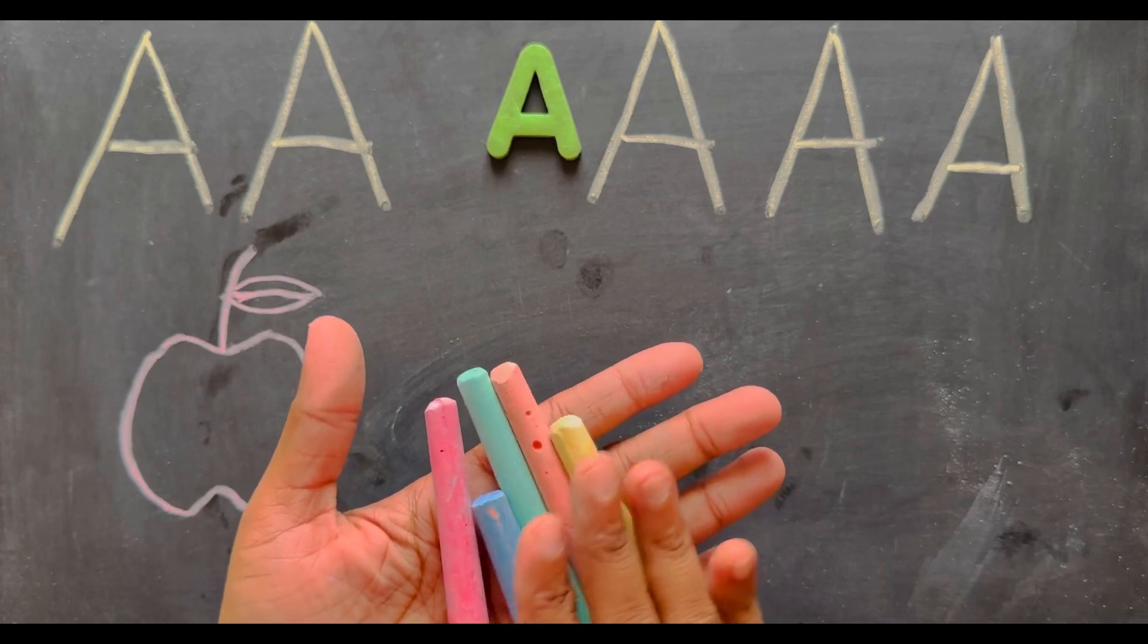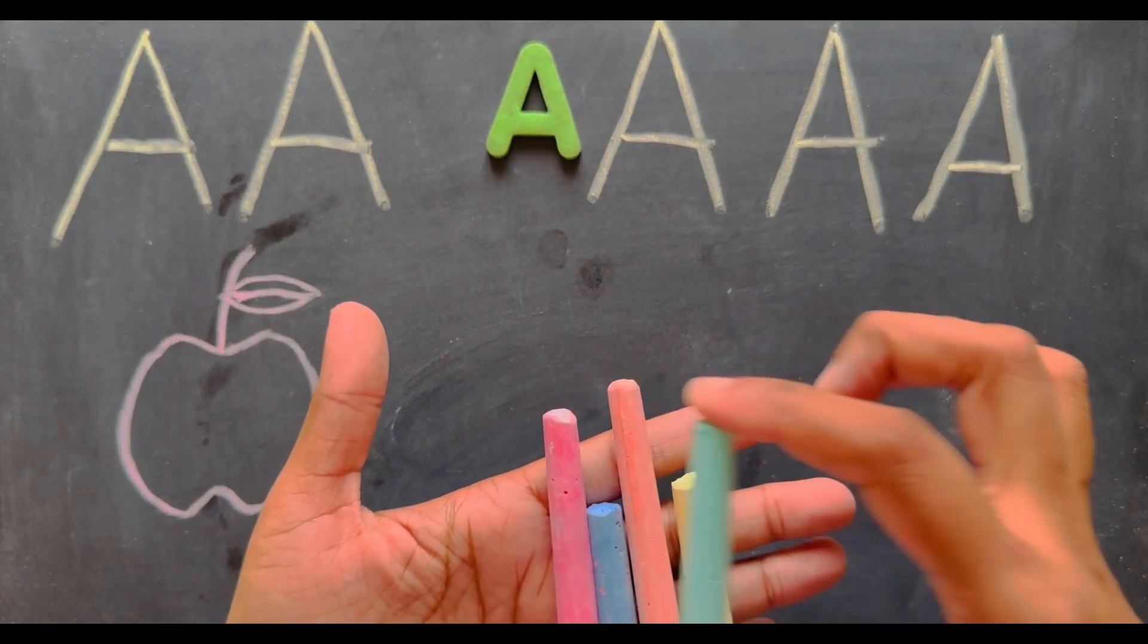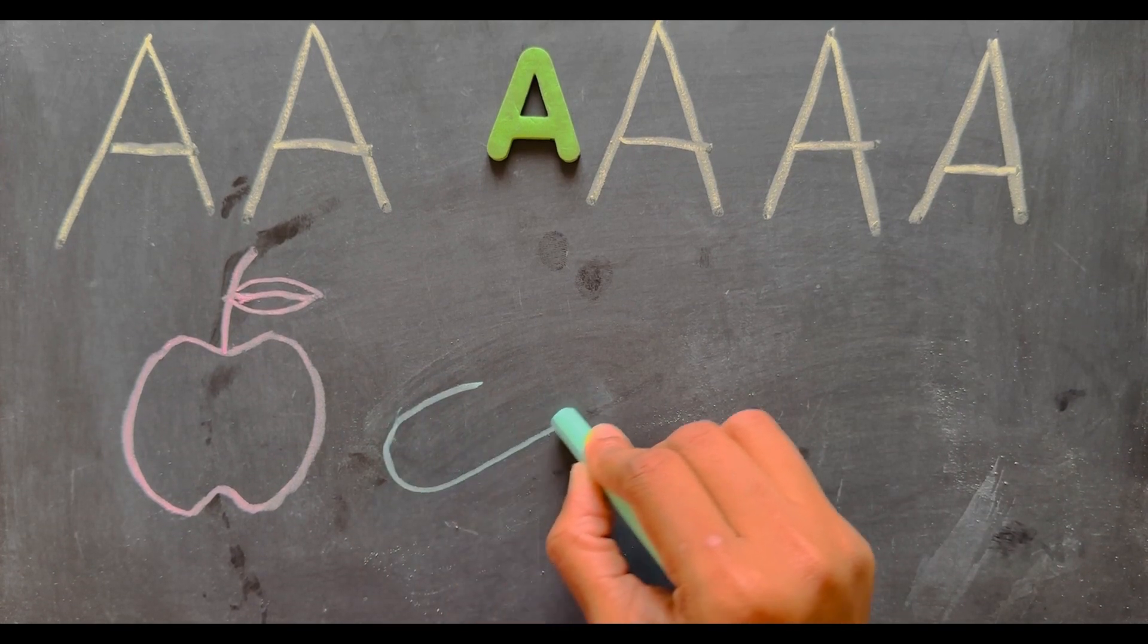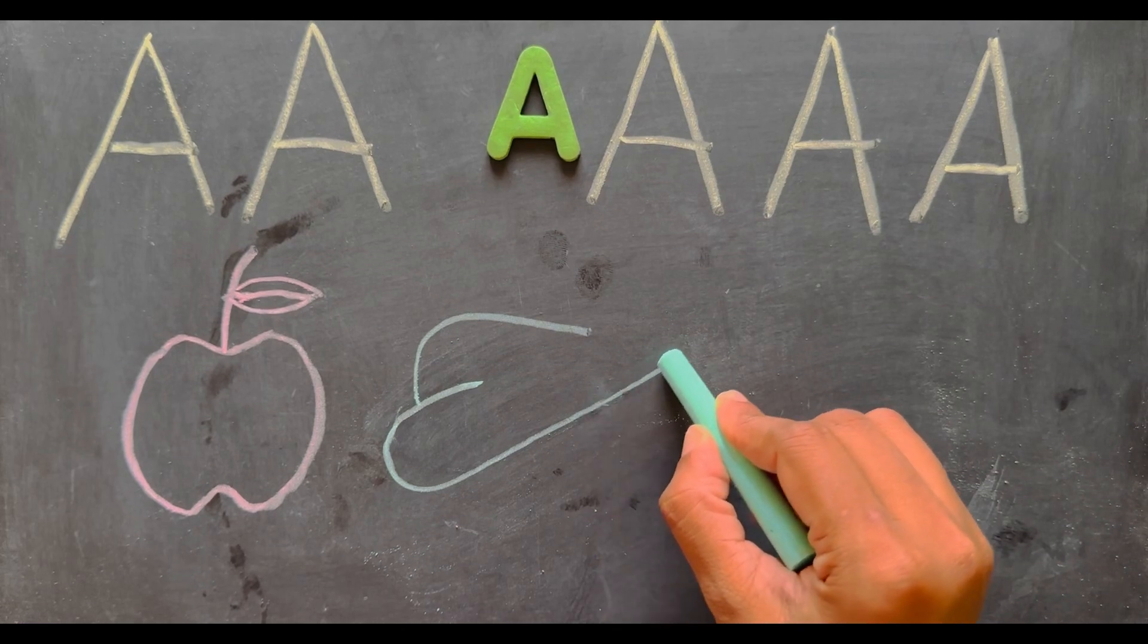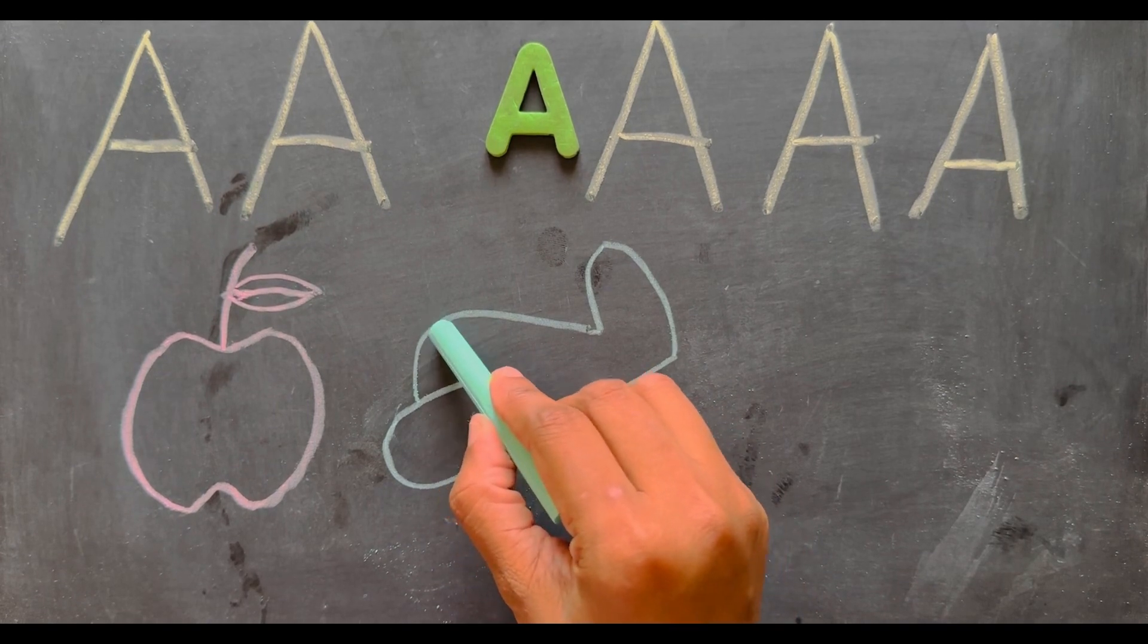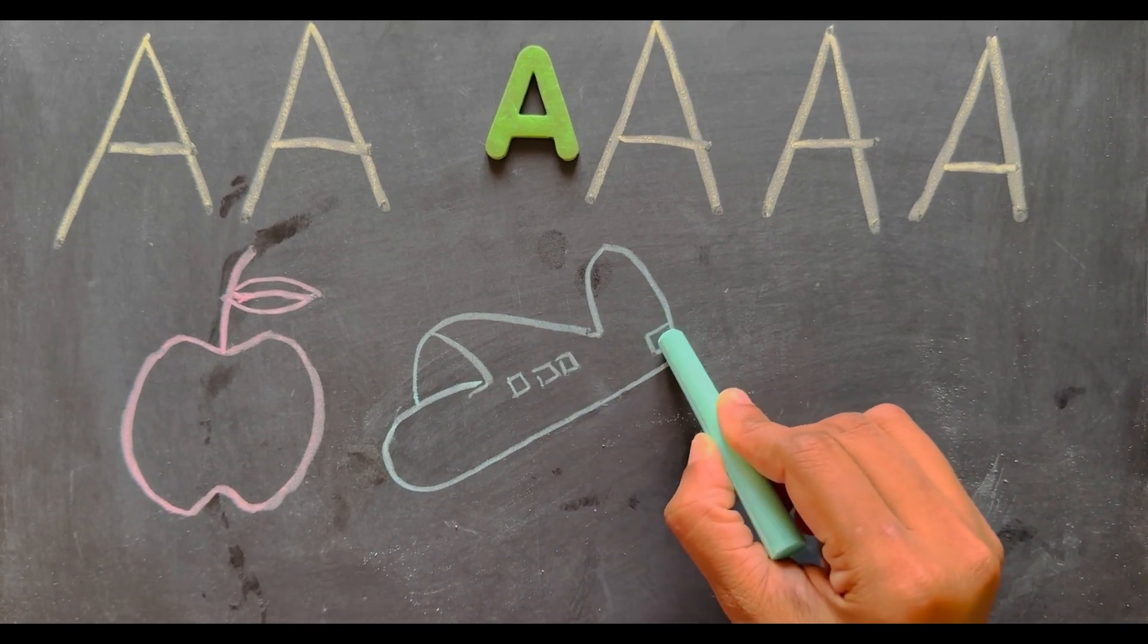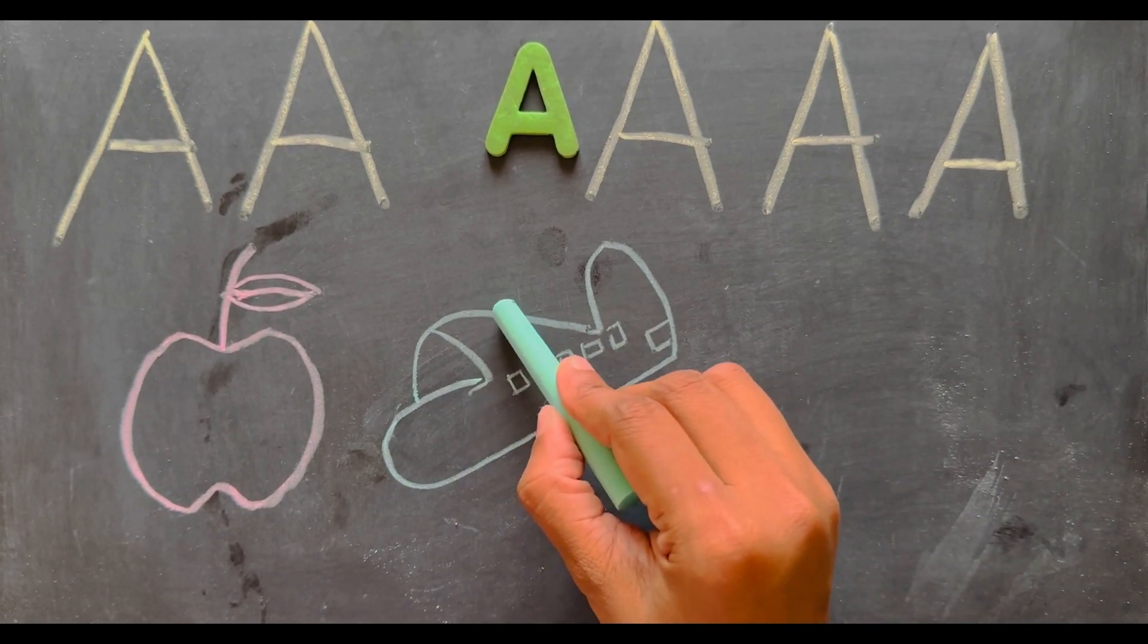Now I am going to draw another object for the letter A. I have taken the green color. Let's check what I am going to draw. Somebody guessed? What is this? This is an airplane.